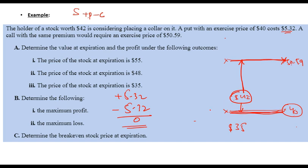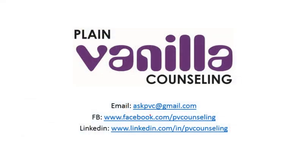The break-even price is $42, the starting price, because from that point any upward or downward movement produces a gain or loss. Since the initial net premium is zero, the break-even equals the initial stock price. If the net premium had been positive, break-even would be lower; if negative, it would be higher.